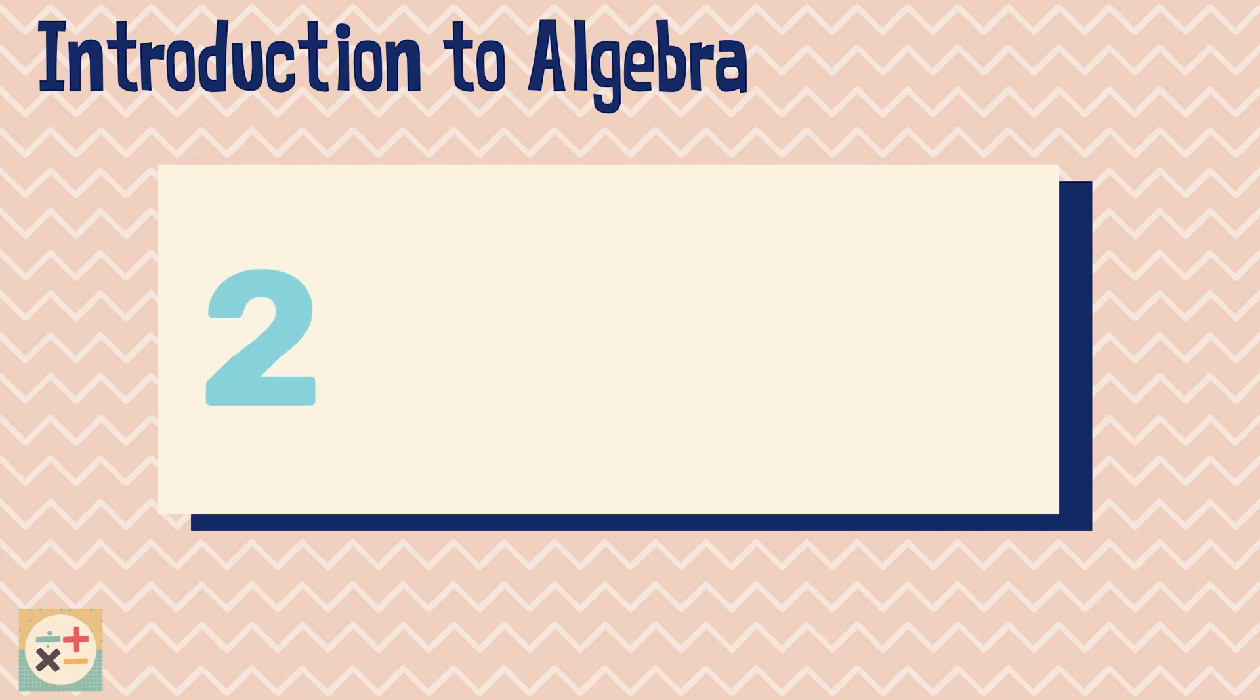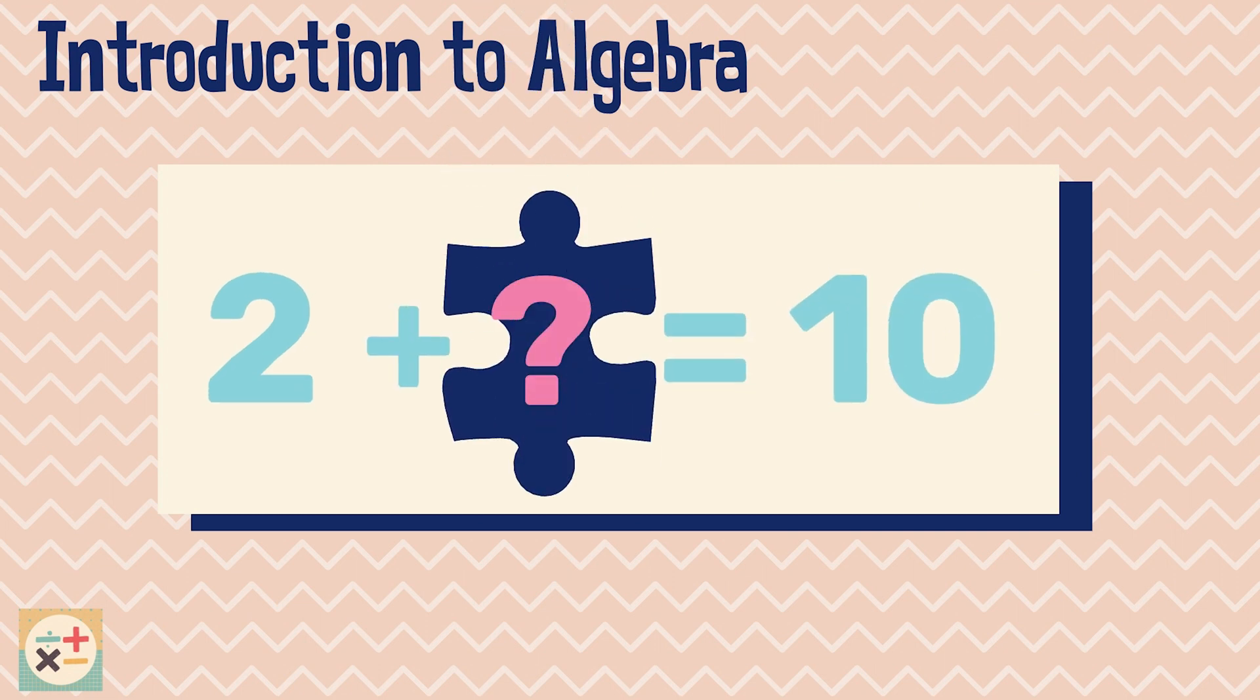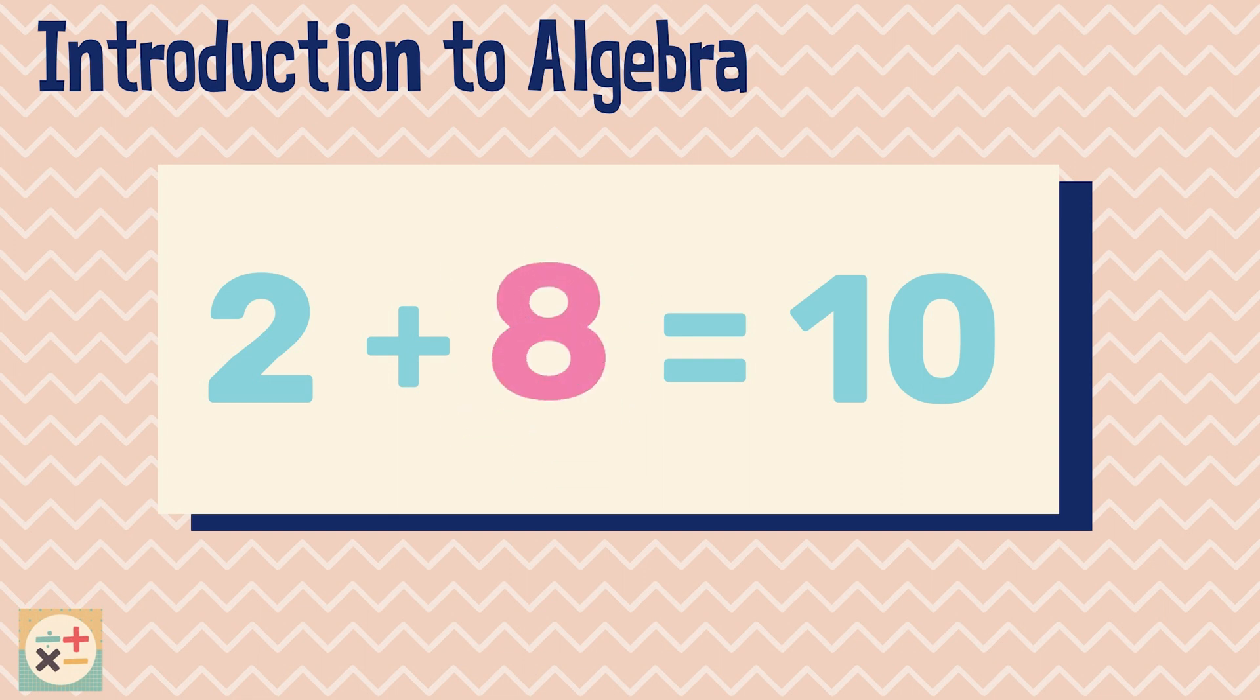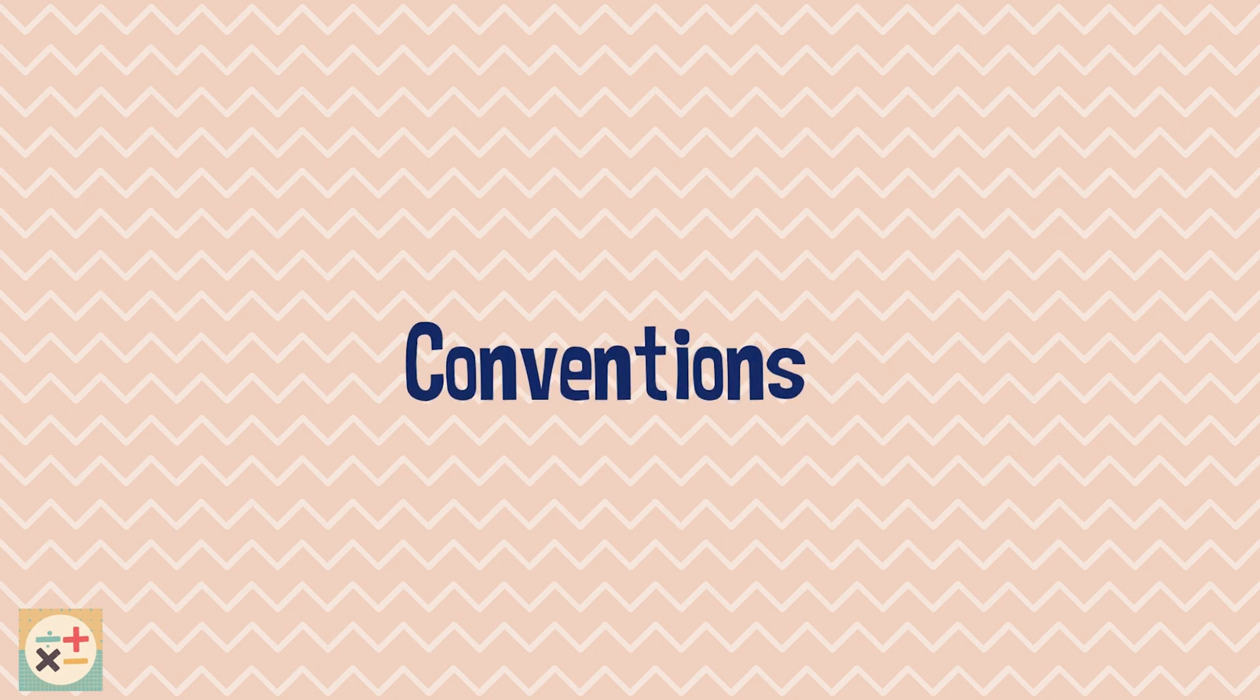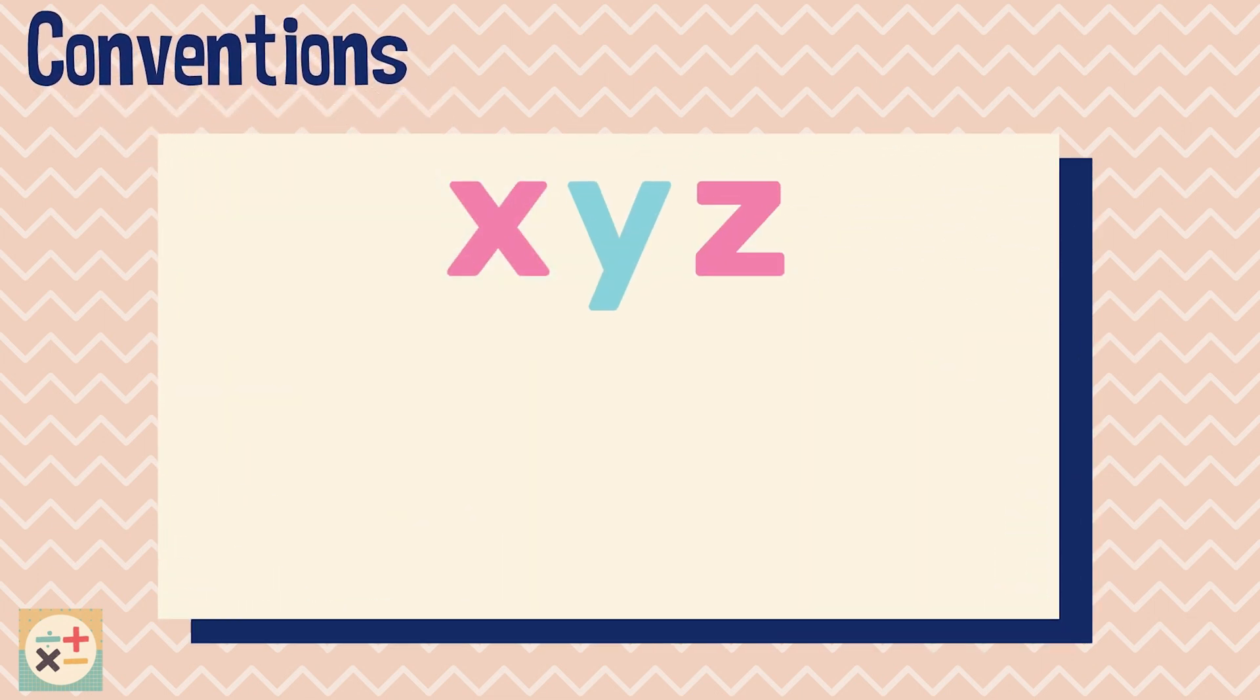In algebra we use letters to represent a number we do not know yet. When letters are next to each other it means they are multiplied together, but the multiplication symbol is often left out to make it simpler.